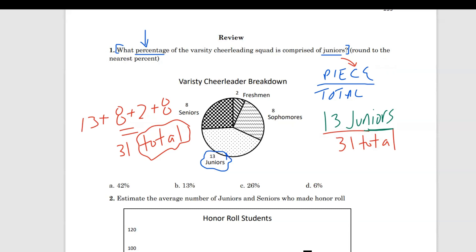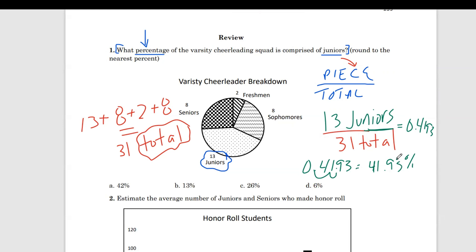The good thing is the question specifies to round to the nearest percent, so I'm only going to go four decimal places out — 0.4193, and I'll stop there. From here, we have to convert our decimal to a percentage. Two ways: multiply by 100 or move the decimal two places to the right — whichever you prefer. That gives us 41.93%. But we're not done because the question says round to the nearest percent, so you have to make sure you know how to round.